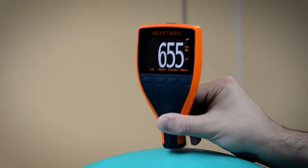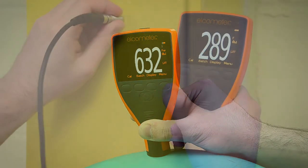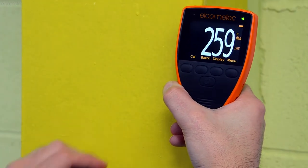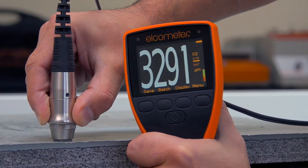Whilst coating thickness gauges designed for use on metal substrates can be placed down and will instantly provide a reading, concrete coating thickness gauges work in a slightly different way.